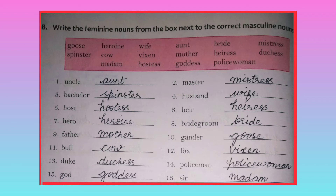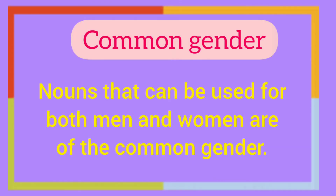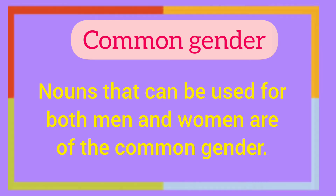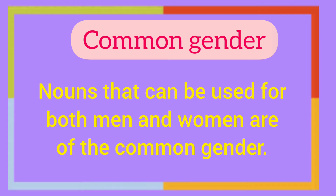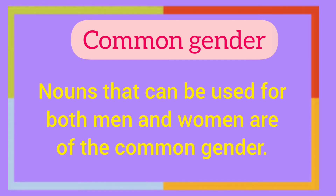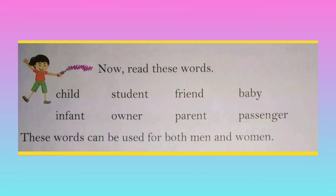Next we learn common gender. Nouns that can be used for both men and women are common gender. Let's see some examples: child, infant, student, owner, friend, parent, baby, passenger. These words can be used for both men and women.